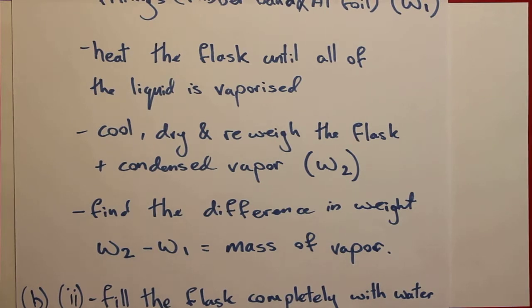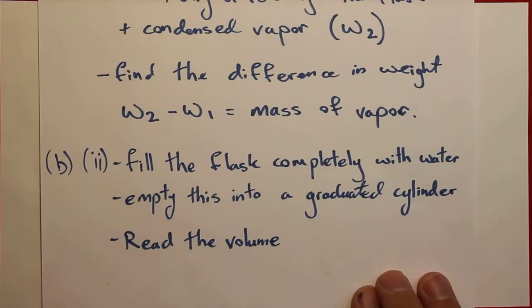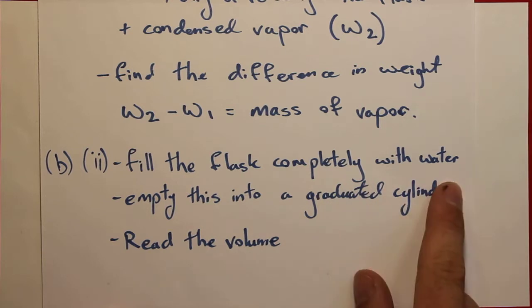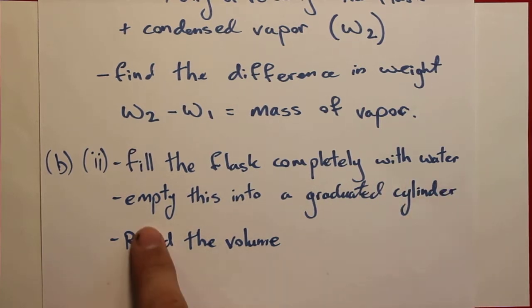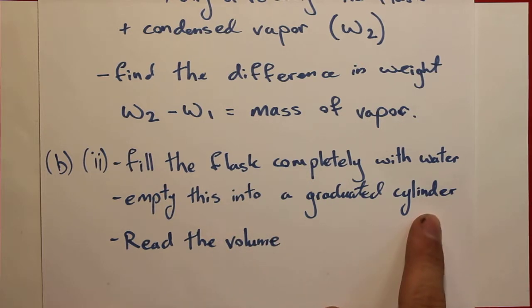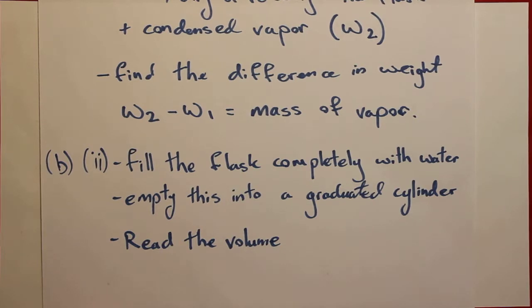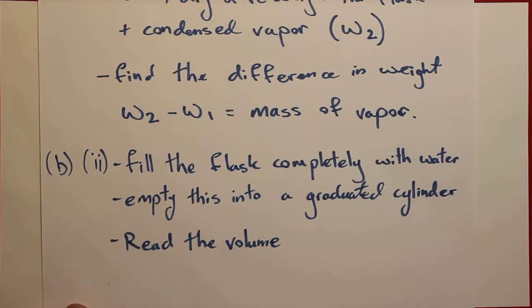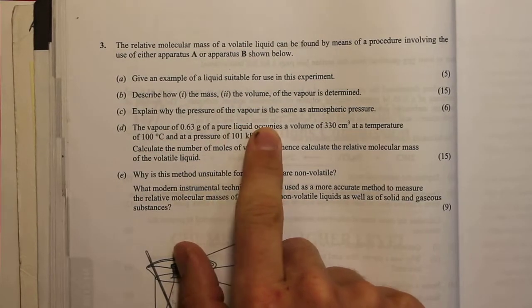For the second part of part B, we describe how the volume of the vapor is determined. We fill the conical flask completely with water up to the very brim, empty all of that water into a graduated cylinder, and simply read the volume of the water level on the graduated cylinder.